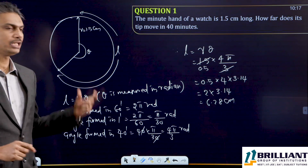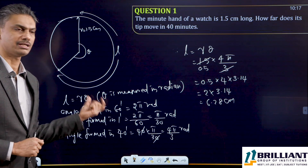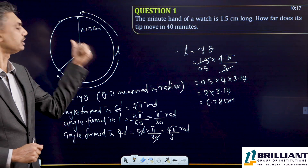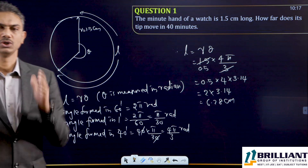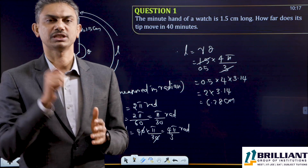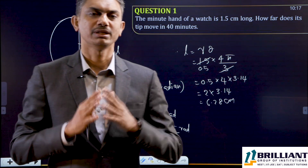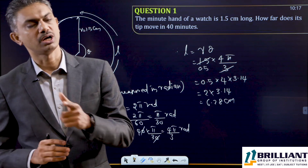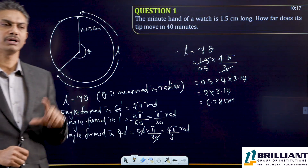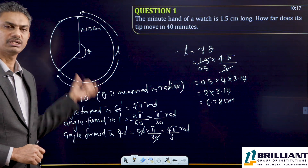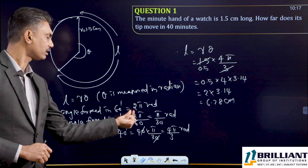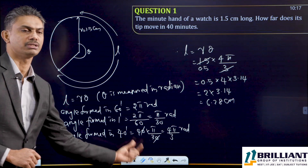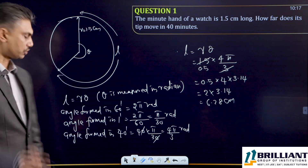The key thing students need to understand is that theta should be in radians. If you take it in degrees, angle in one full rotation is 360 degrees, so in 60 minutes it is 360 degrees and in 1 minute it is 6 degrees — but you still need to convert to radians. So it is better to work in radians from the beginning to avoid that extra conversion step. Let us move to the next question.